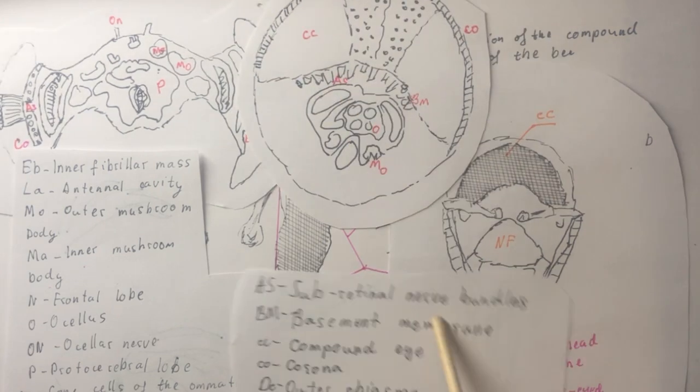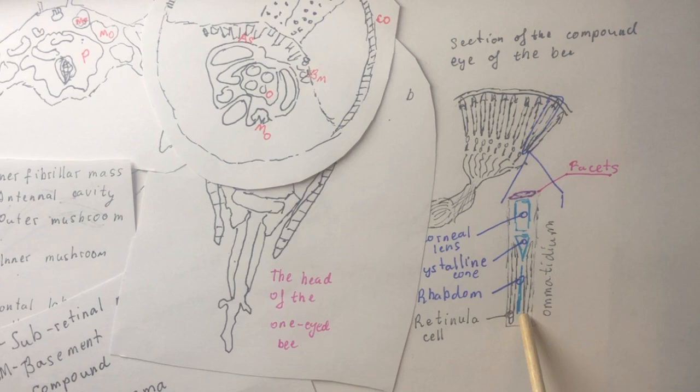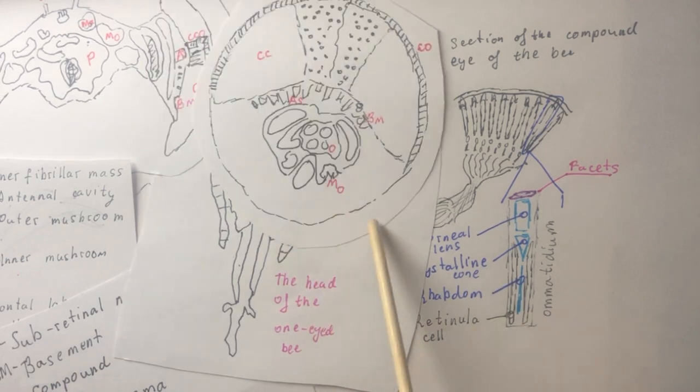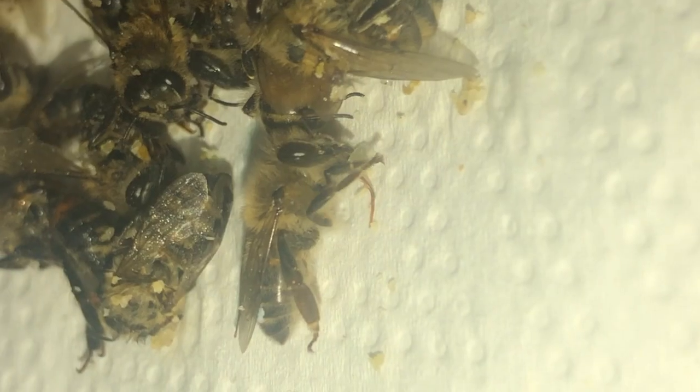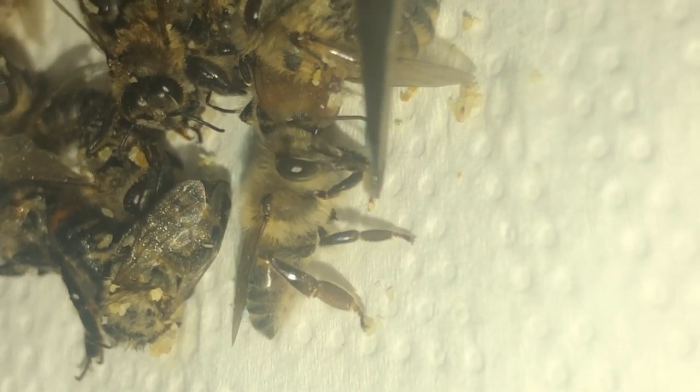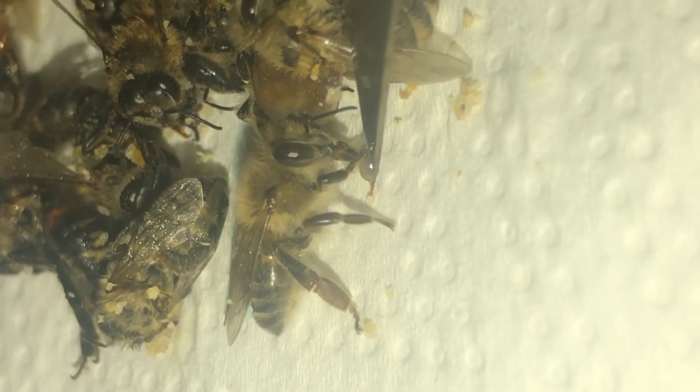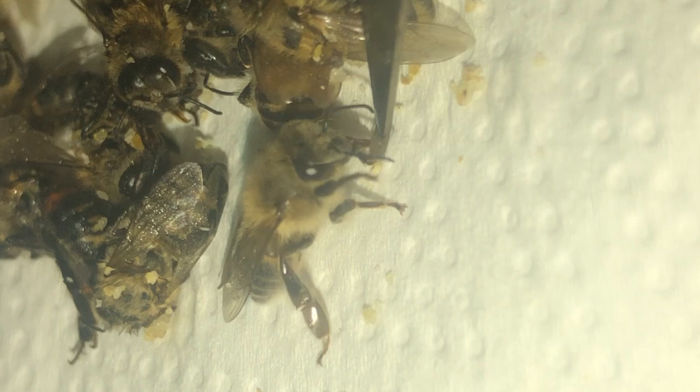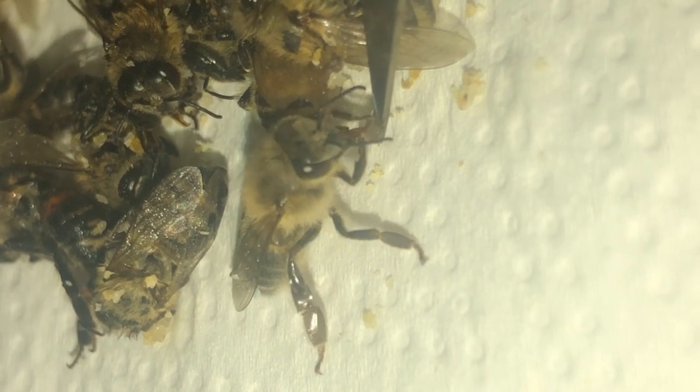Individual ommatidia are elongated due to the greater depth of the single eye. Such insects can be viable and active, but some of them move or fly incorrectly due to their limited ability to navigate in space.